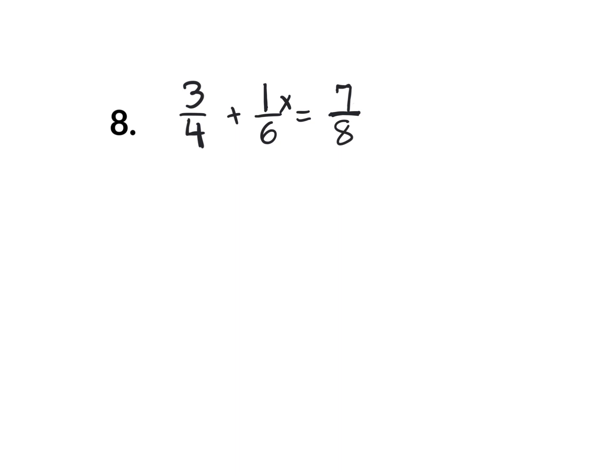Some people get freaked out by fractions, but it's easy to get rid of them. You could get rid of one fraction at a time by multiplying everything by the denominator, or get rid of all fractions at once by multiplying everything by the LCD. To find the LCD, go to the biggest denominator — eight — and ask yourself: can you change 4 to become 8? Yes. Can you change 6 to become 8? No, because 6 times 2 is 12. So 8 didn't work — double it. What's 8 doubled? 16.